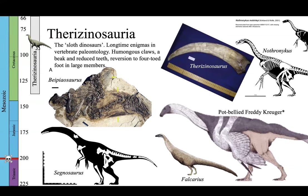Easily the coolest therizinosaur is the great big one, Therizinosaurus — that's the owner of that claw in the picture. Remember, every time you see a claw on a dinosaur or fossil animal, what you're seeing is the bone underneath the keratin. The keratin sheath that would have been on this claw would have made it much longer — maybe 30% longer — and sharper. So Therizinosaurus is this totally incredible, and you can see what's written there, pot-bellied Freddy Krueger sort of amazing organism, almost certainly a big herbivore on its landscape.